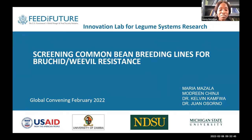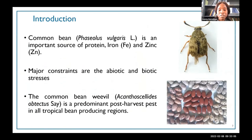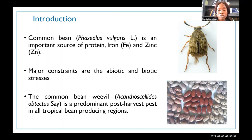Good morning and good afternoon depending on where you are. I welcome you to this presentation entitled 'Screening Common Bean Breeding Lines for Bruchid Resistance.' This will be a joint presentation by myself, Chanje Modrin, and Maria Mazza. Common bean is an important crop as it is a source of protein, iron, and zinc. Despite its importance, it faces major constraints including abiotic and biotic stresses. Among the biotic stresses we have the common bean weevil, Acanthoscelides obtectus, which is a predominant post-harvest pest in all tropical bean-producing regions.